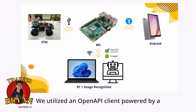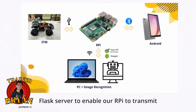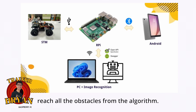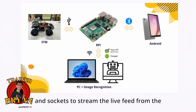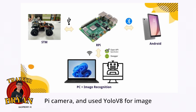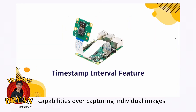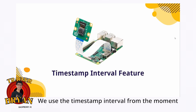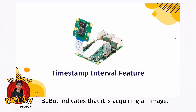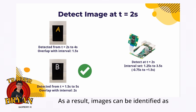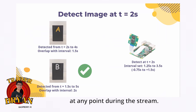For our pathfinding algorithm, we utilize an OpenAPI client powered by a Flask server to enable our RPI to transmit obstacle and robot locations and directions, retrieving the shortest path to reach all the obstacles. For image recognition, we utilize UDP and sockets to stream the live feed from the Pi camera and use YOLO V8 for image detection. To maximize streaming capabilities over capturing individual images, we use timestamp intervals from the moment the robot indicates it has acquired an image. By analyzing the timing and content in the stream, we identify the largest overlap as the detected image, so images can be identified as long as they have been encountered at any point during the stream.